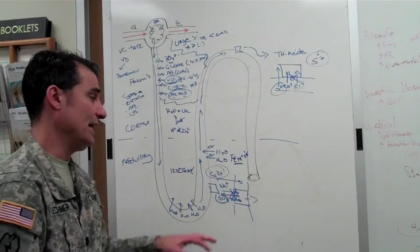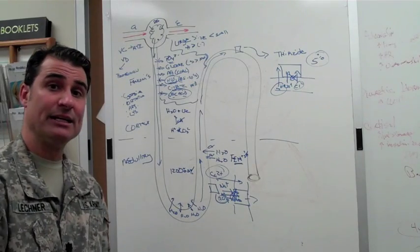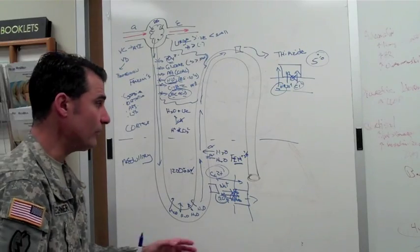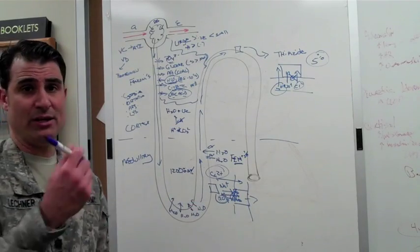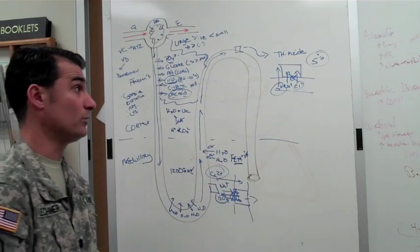Therefore you reabsorb bicarbonate and that's why when you take a diuretic you become alkalemic in your blood.